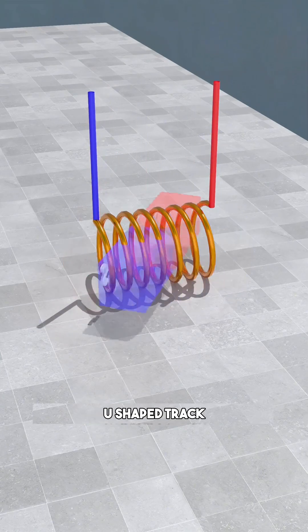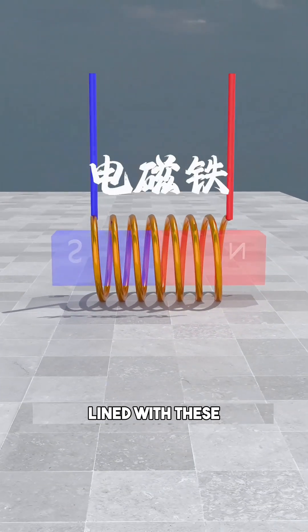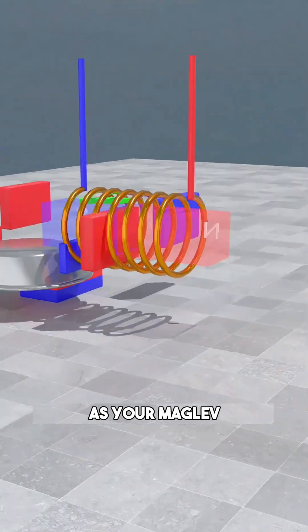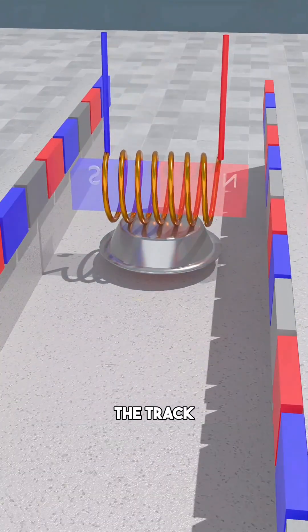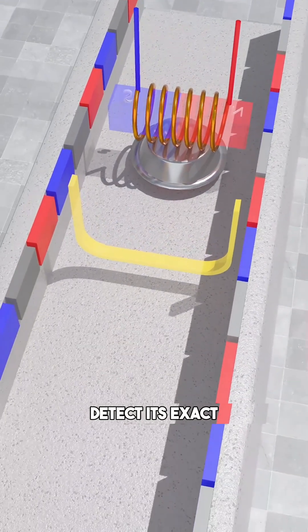Now, imagine a massive U-shaped track lined with these electromagnets. As your maglev dog bowl enters the track, high-tech sensors detect its exact position.